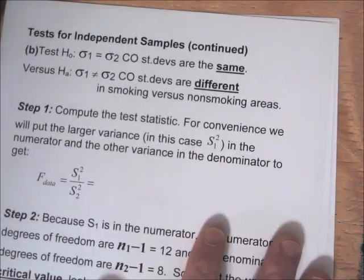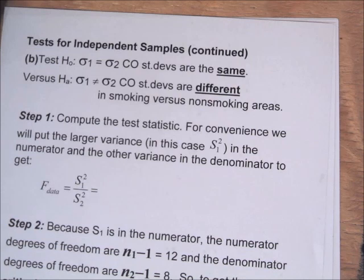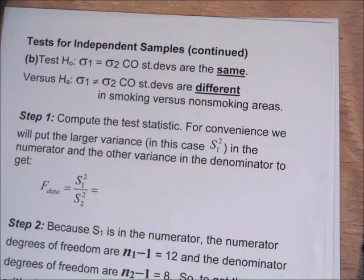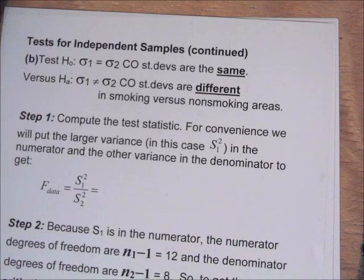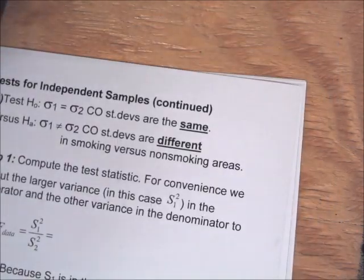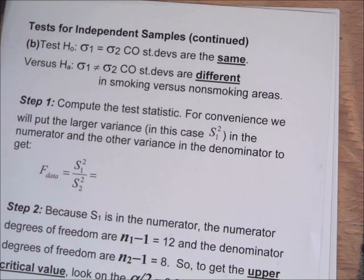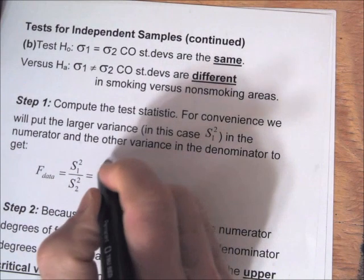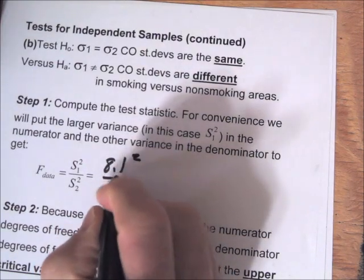We can also do a test for the standard deviations. We test H0: sigma1 equals sigma2 — standard deviations are the same — versus HA: sigma1 not equal to sigma2 — standard deviations are different in smoking versus non-smoking areas. This test uses the F table. It's easier to put the larger standard deviation in the numerator, so our test statistic is S1 squared divided by S2 squared.